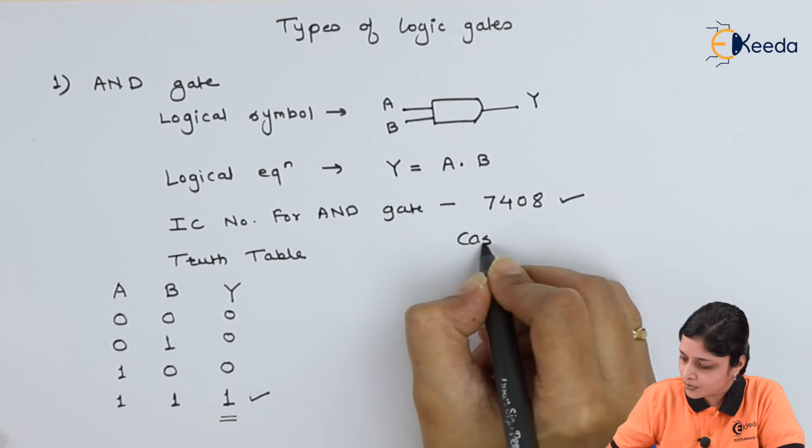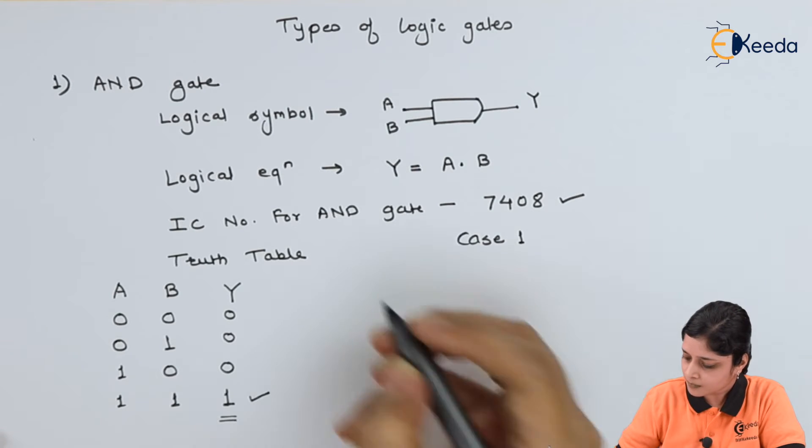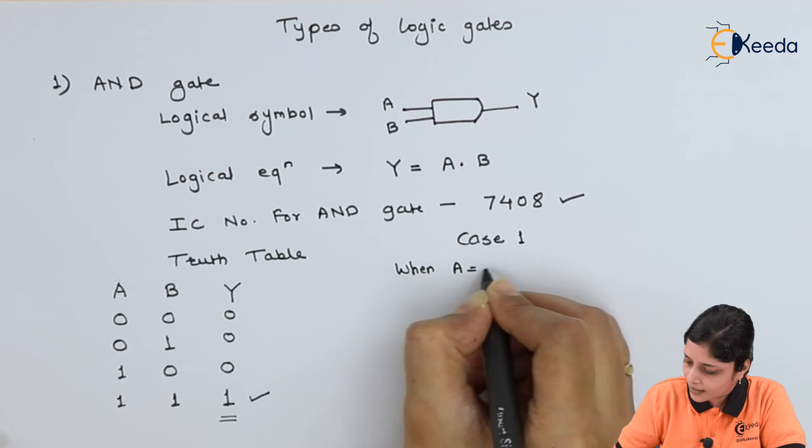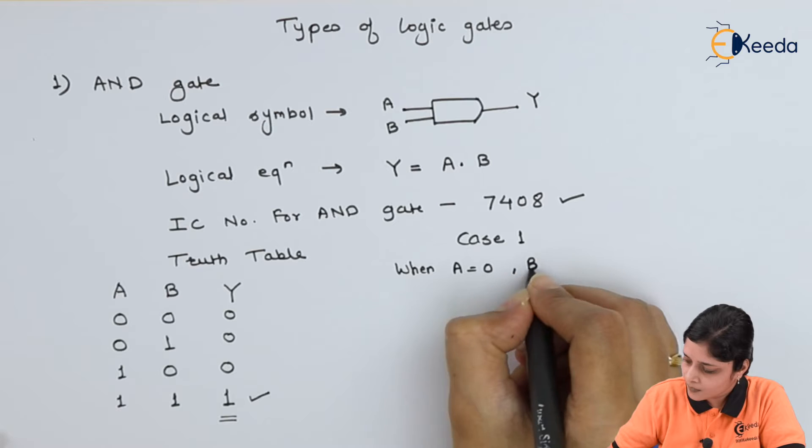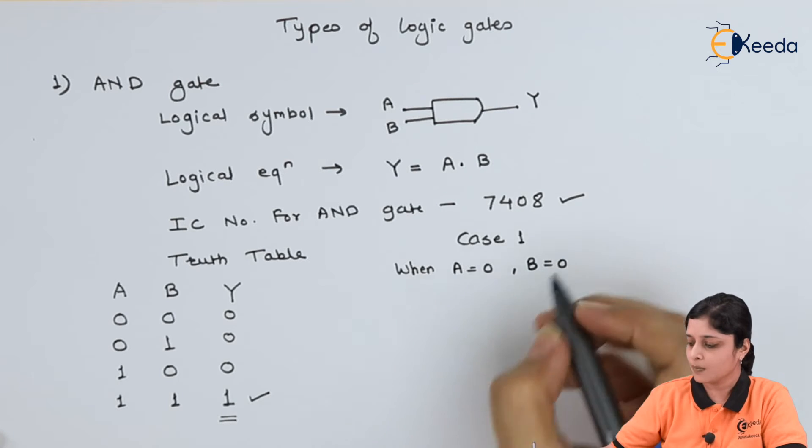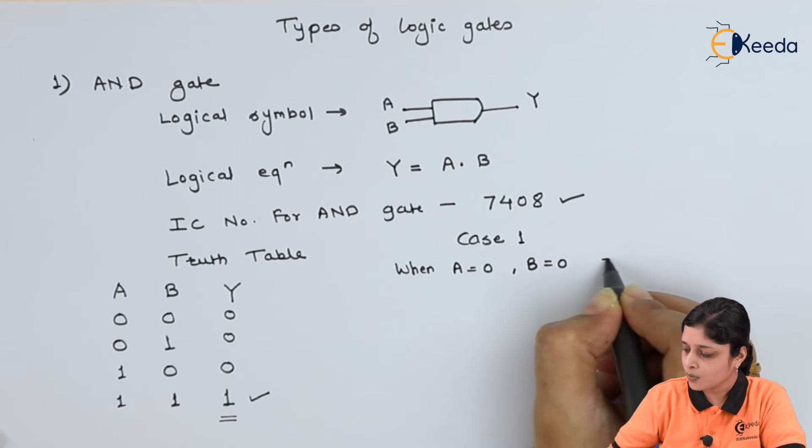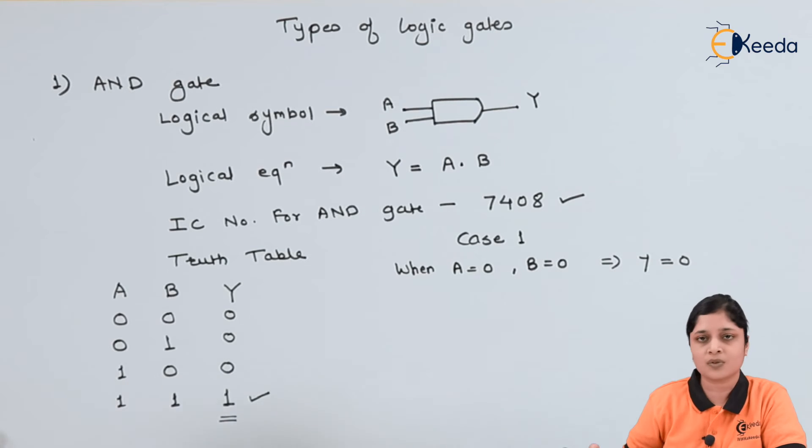Now we are going to see case 1. When A equals to 0, B equals to 0, means A dot B, 0 dot 0, we will get as Y equals to 0. We are going to now write down in detail the basics of truth table, basic explanation of truth table.